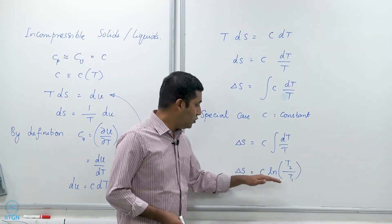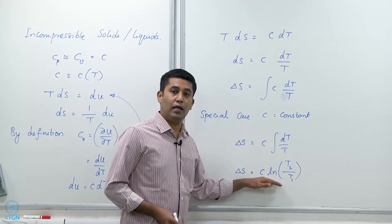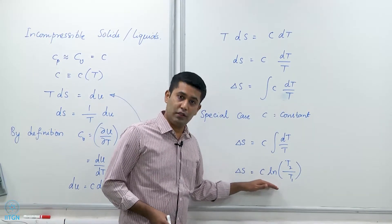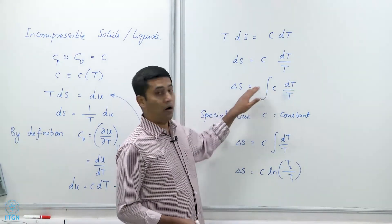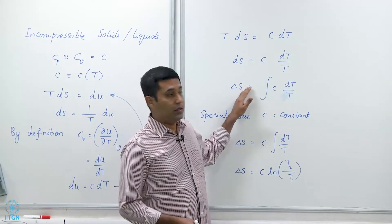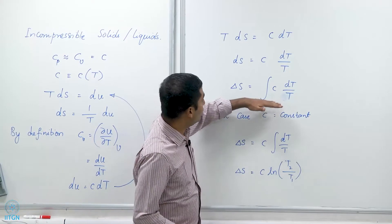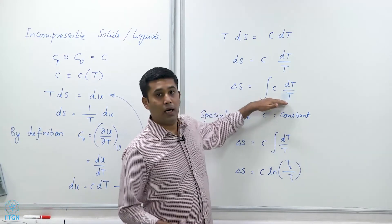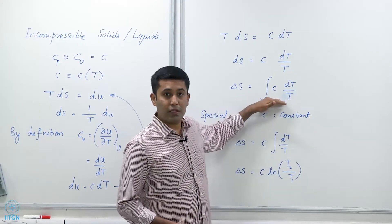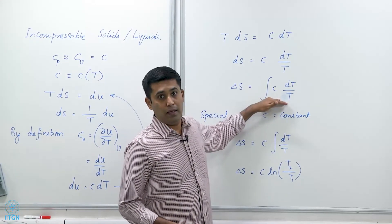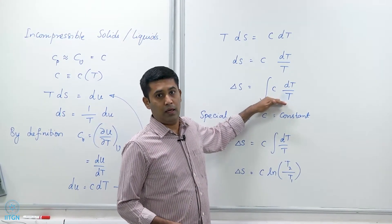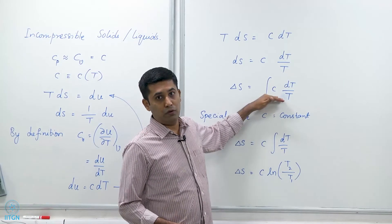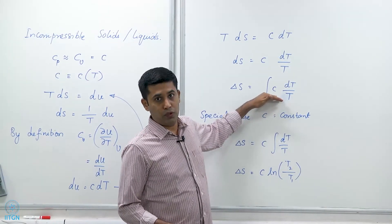For me to use this equation I need to be able to justify taking c out of the integral. For me to use this I need to be able to justify an incompressible substance. As long as I can do that — an incompressible substance with a constant specific heat — then I can use this simplified expression.